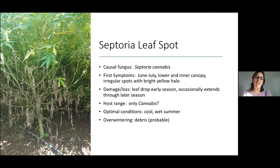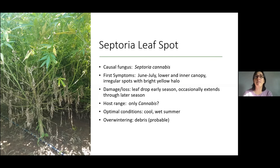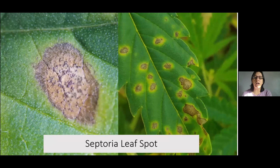Septoria likes a lot of humidity, which builds up in the lower and inner parts of the plant, especially as rains come and the soil is wet. One very distinct feature: the irregular spots — not round — are bordered by a very bright yellow halo. Those yellow regions expand very rapidly and then leaves drop really fast, which is quite startling to many people. If it gets dry, it pretty much shuts down. We're guessing Septoria cannabis overwinters in debris, and there may be another host out there, because we see it in fields that haven't had hemp or cannabis in many years.